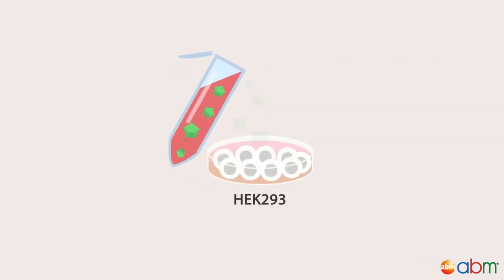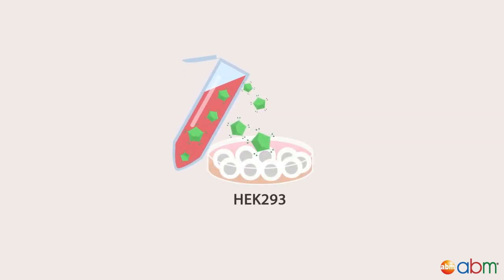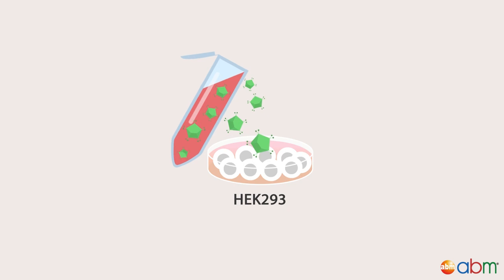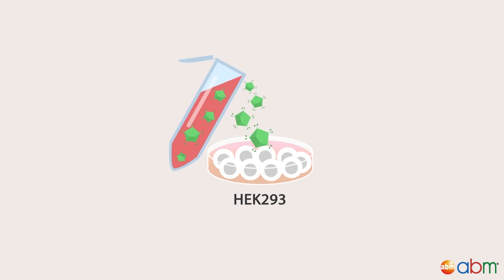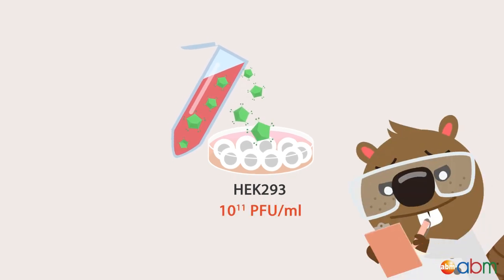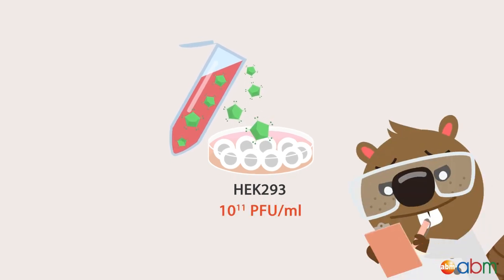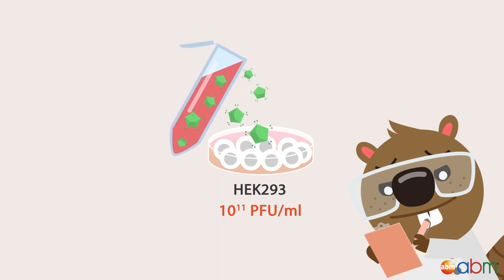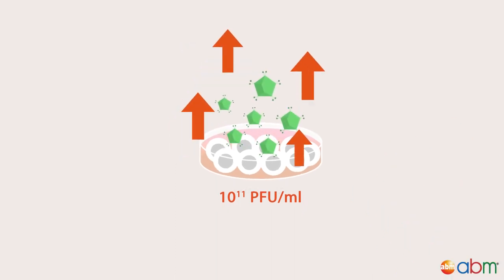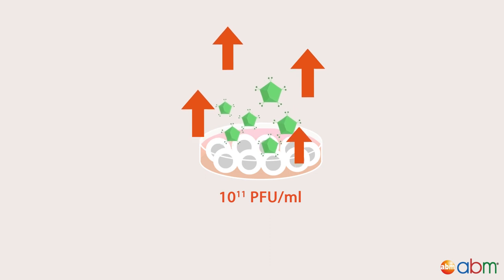To generate high-titer adenovirus, we will infect HEK293 cells with pre-made seedstocks as discussed in our previous video. We will use 10 to the 11th PFU per ml as an example in the following procedure. However, more or fewer cells can be used for a lower or higher titer as desired.